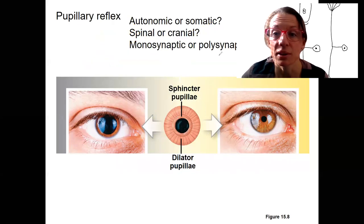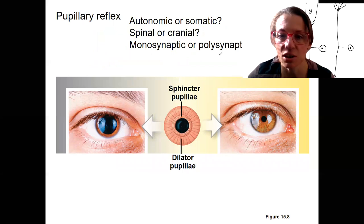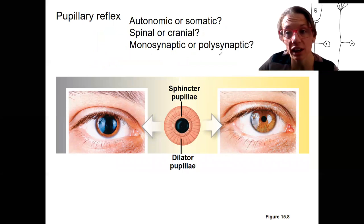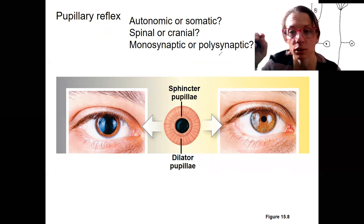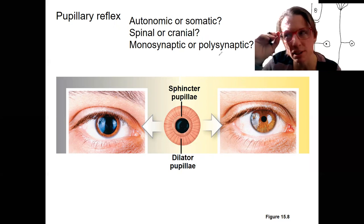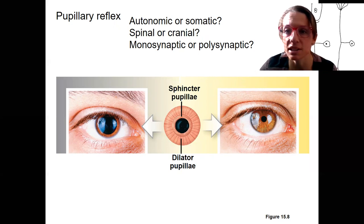Could you answer about this reflex that occurs in response to light? You could shine a light on your eyes and you'd see your pupils constrict with a bright light shown on them. You go in a dark room, they get bigger. That is a reflex. Is that reflex autonomic or somatic? Is it spinal or cranial? And what do you think? Can you tell me if it's monosynaptic or polysynaptic?